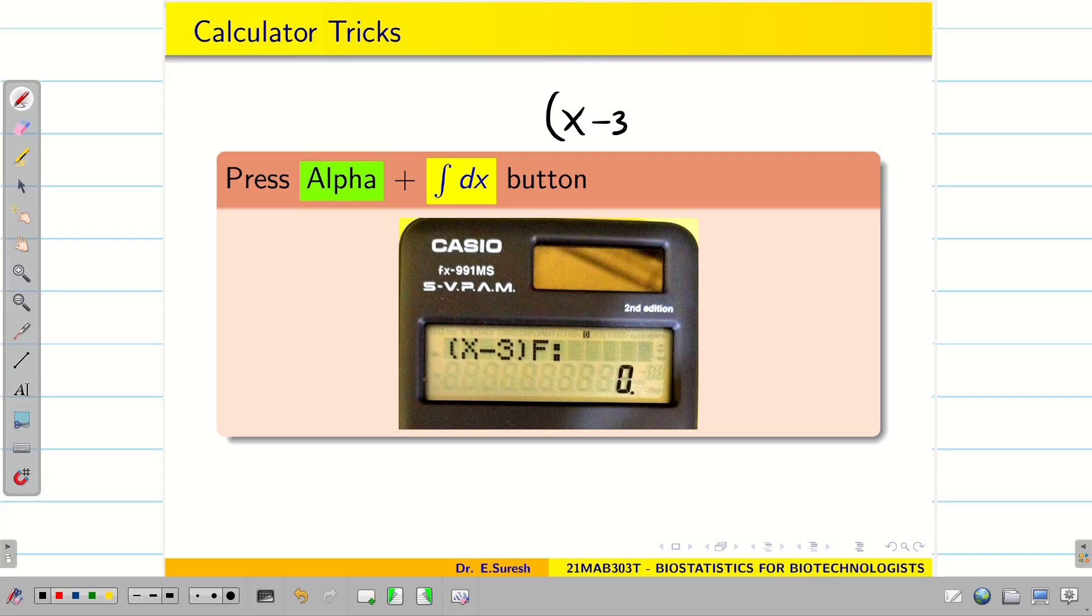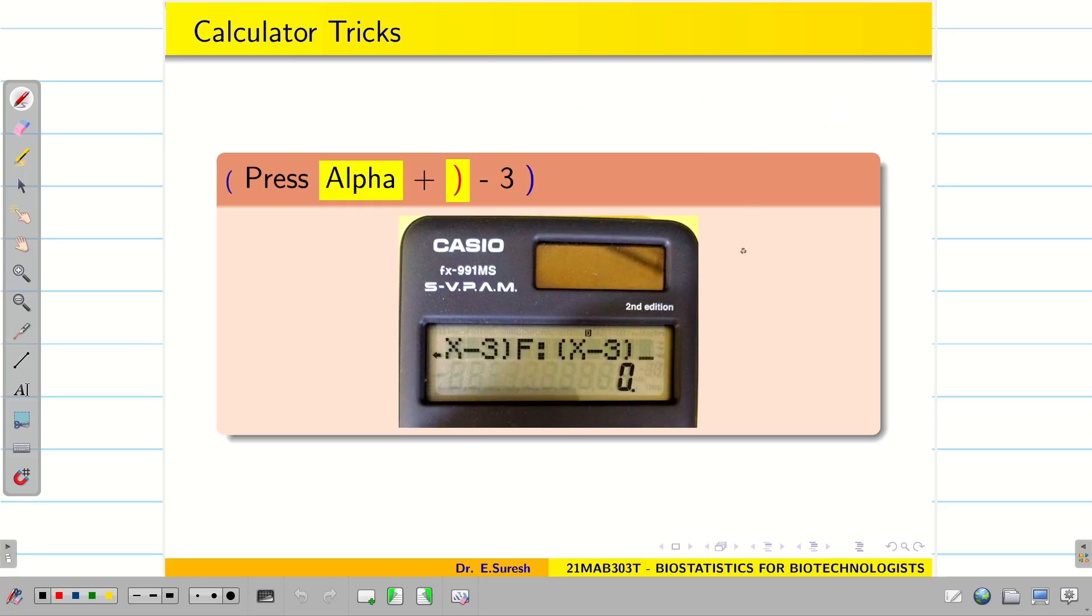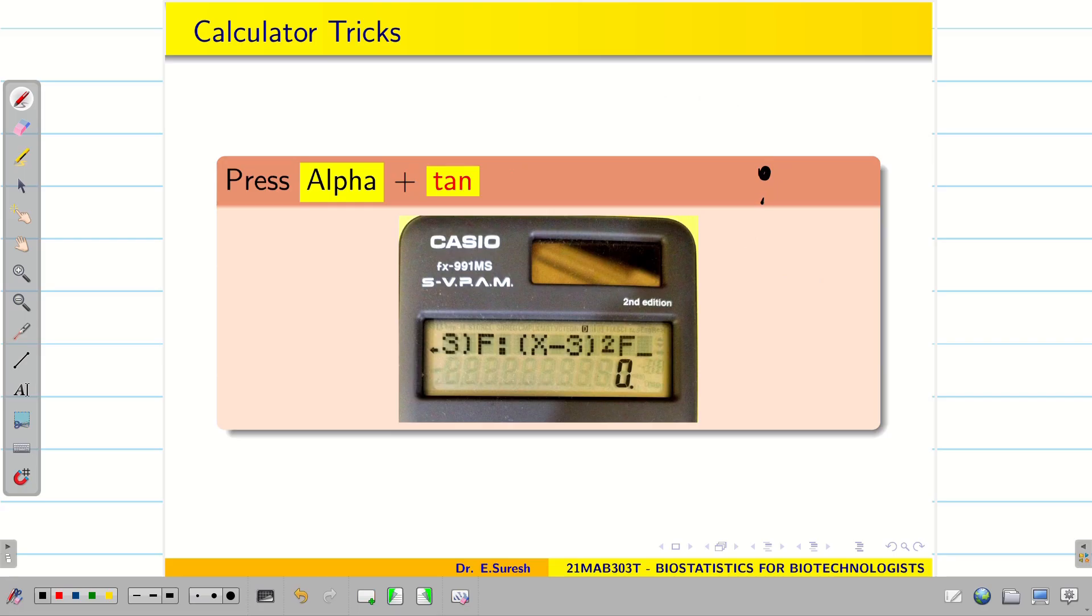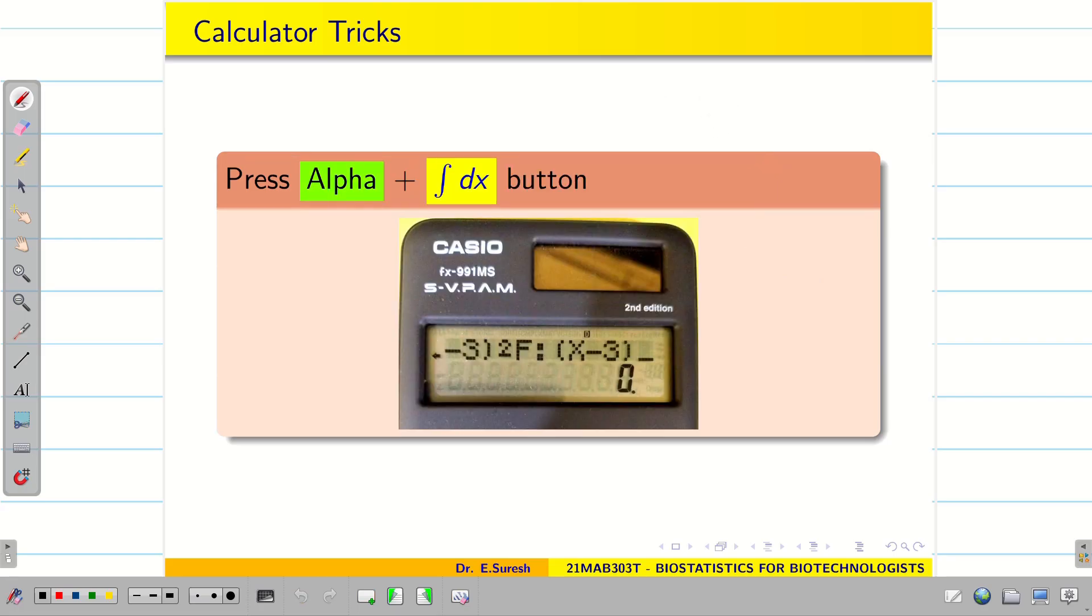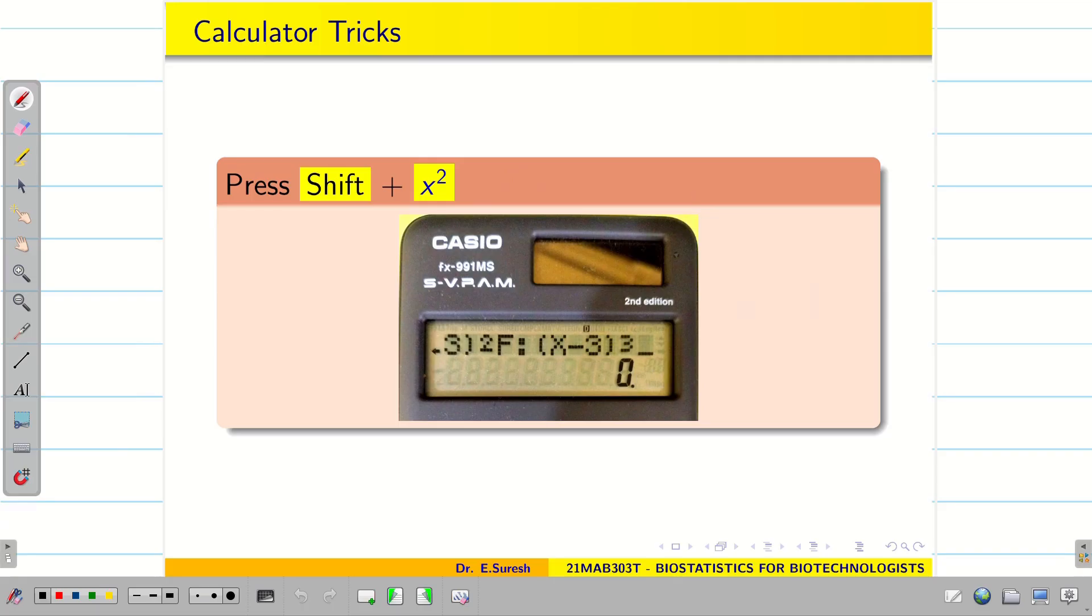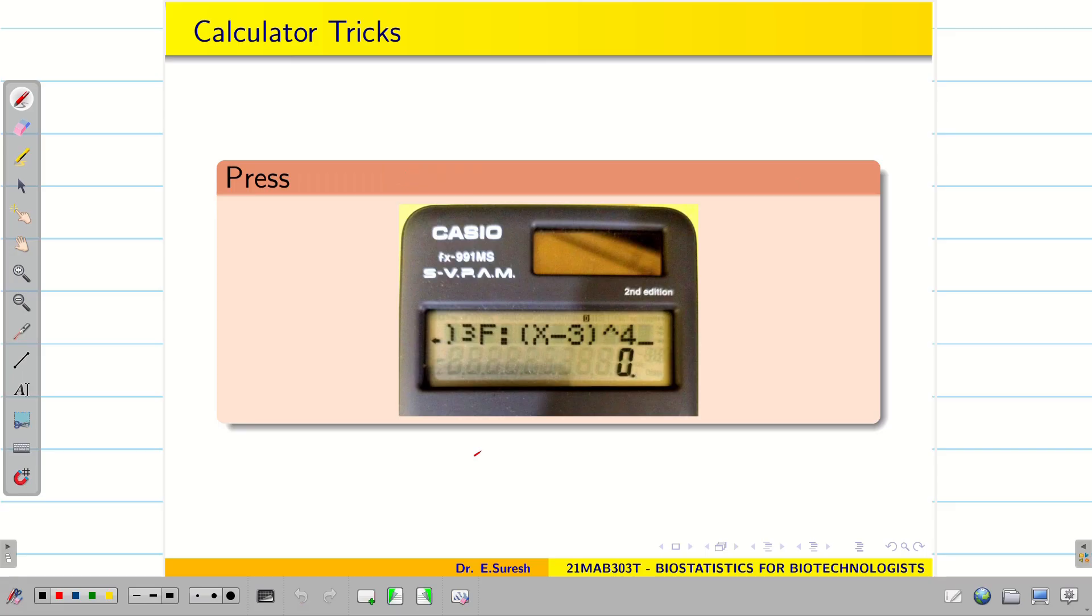After x minus 3 into f, I want to enter x minus 3 whole square f. So x minus 3 procedure is same. Now you can see x square button in the calculator. Press that. You get square. Then press alpha plus tan. You get f. Again press integral dx button by pressing alpha. We need x minus 3 all cube. Type up to x minus 3. If you press shift plus x square, you get x cube. And then alpha plus tan. You get f. Again you press colon. Then you get x minus 3 whole power 4.